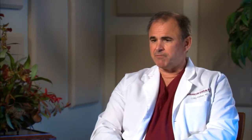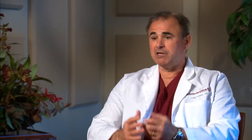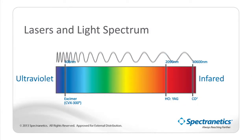This laser which we're using falls into the ultraviolet spectrum. But most of the lasers which have historically been used in medicine are of the infrared spectrum. These are very different. One of the first things you can see from this chart is the wavelengths. The wavelengths of ultraviolet laser are much shorter than the wavelengths of infrared laser.